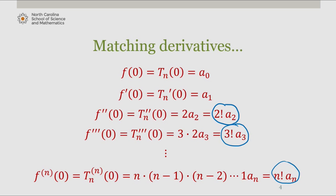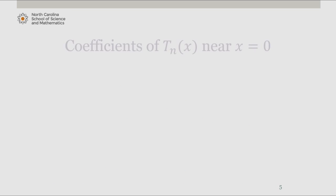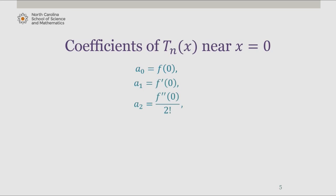We can then solve for the coefficients of T sub n of x. We find that a sub 0 equals f of 0, a sub 1 equals the first derivative of f at 0, a sub 2 equals the second derivative of f at 0 divided by 2 factorial, a sub 3 equals the third derivative of f at 0 divided by 3 factorial, and so on. Our general term is the nth derivative of f at 0 divided by n factorial.